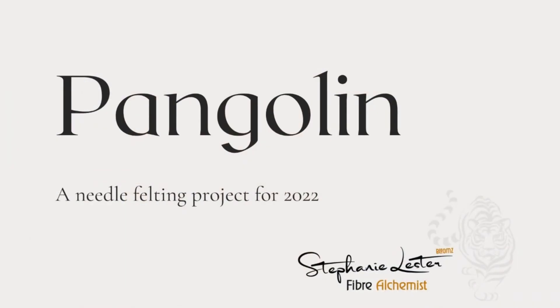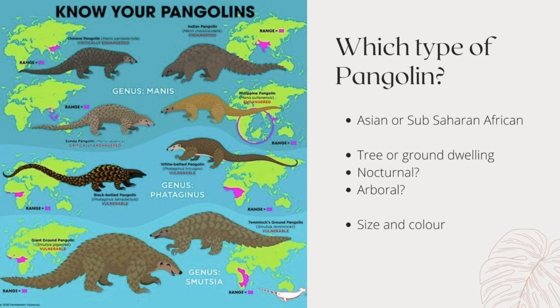Moving to the slides now. The first topic is knowing the pangolins and which type to choose. Pangolins are split between Asian and sub-Saharan African species, shown here on a map so you can see exactly where each one lives.